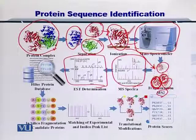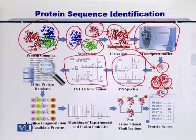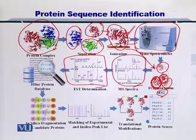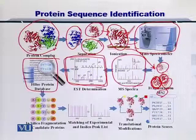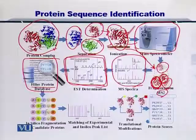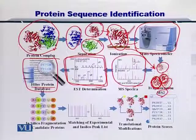Sequence tags are small peptide sequences that can be obtained directly from the mass spectrometer data. Once you have these peaks from the experiment, then you can look at the protein sequence databases. You can filter these databases by looking at MS1 — if the intact protein has a specific mass, then you can filter the protein database and only keep those proteins that have a similar mass.